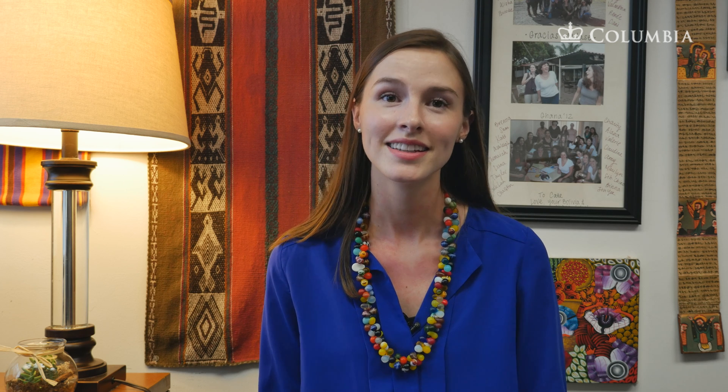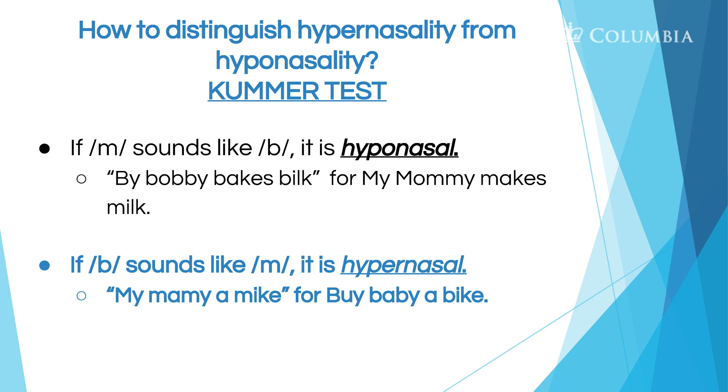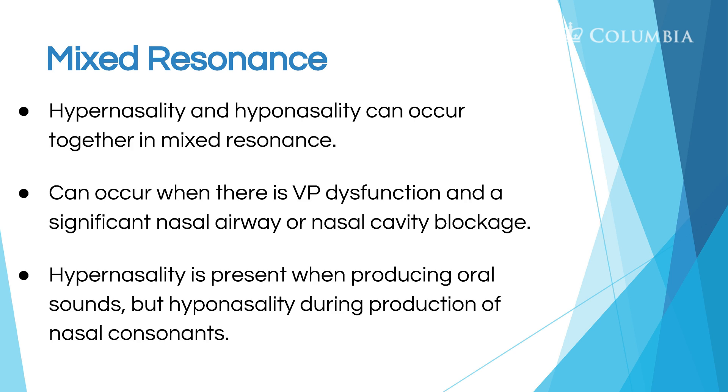So how do you distinguish hypernasality from hyponasality? You can do the cummer test. If an M sounds like a B, it is hyponasality — as in 'my mommy makes milk' becomes 'by baby a bike.' If the B sounds like an M, it is hypernasality — as in 'by baby a bike' becomes 'my mommy a mine.' We can also see mixed resonance where hypernasality and hyponasality occur together, which happens when there is velopharyngeal dysfunction and a significant nasal airway or nasal cavity blockage. Hypernasality is present when producing oral sounds, but hyponasality is present during production of nasal sounds.